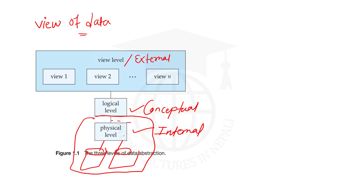At the physical level, things like data structures, access paths, and indexing are hidden from the user. After that, the logical level tells about what kind of data is stored in the database and what are the relationships between them — which relationships exist in the fields. The logical level tells about what data is stored and how it relates.